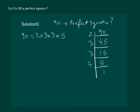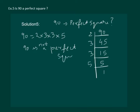We see that the factors 2 and 5 are not occurring in pairs, meaning we cannot form pairs for 2 and 5. Therefore, 90 is not a perfect square. There is another way of looking at this: 90 has only one zero, but from the properties of perfect squares, a number can be a perfect square only if it has an even number of zeros. So directly, we could have concluded that 90 is not a perfect square.